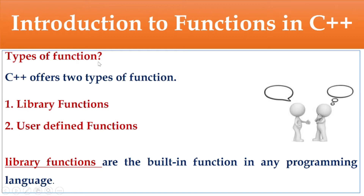Types of functions: C++ offers two types of functions, namely library functions and user-defined functions. Library functions are the built-in functions in any programming language — they are already defined and available to reuse. User-defined functions are functions we can define as per our own requirements.